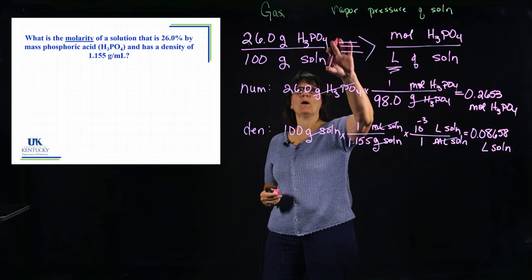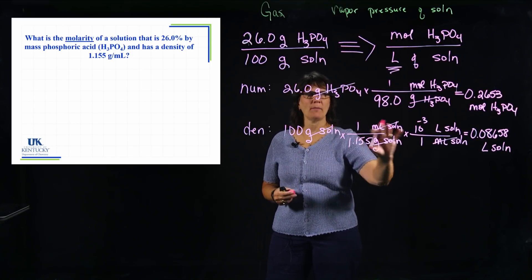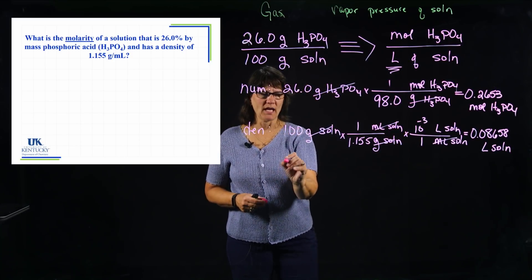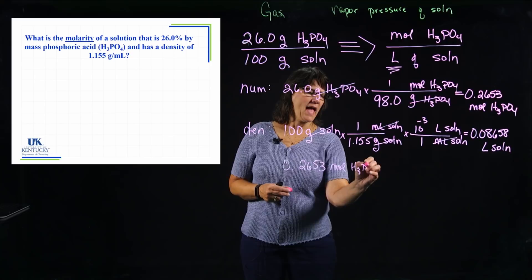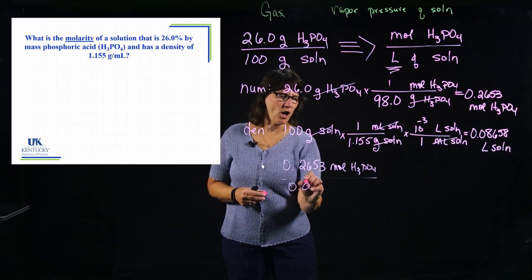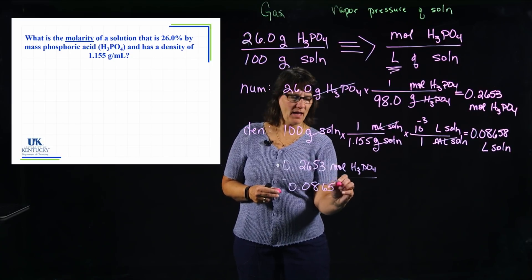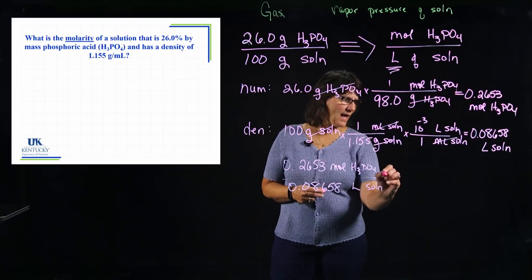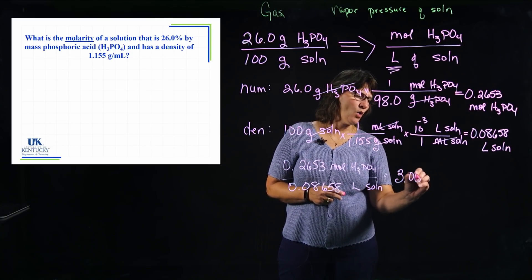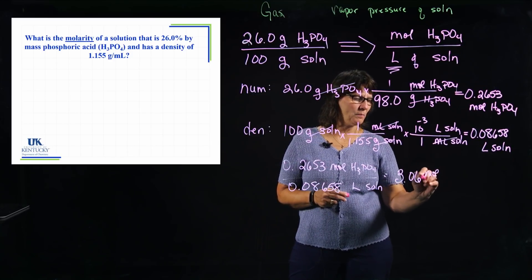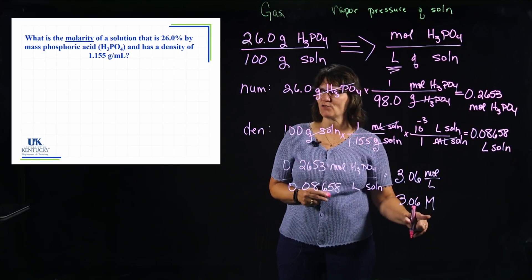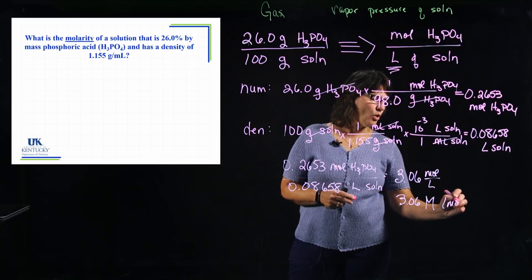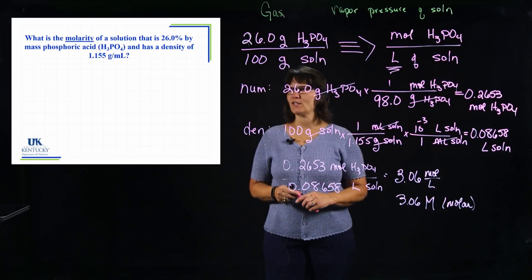Now we put them back together. We take 0.2653 moles divided by 0.08658 liters of solution, which gives 3.06. The units are moles of H₃PO₄ per liter, which we write as 3.06 M — it is a 3.06 molar solution of phosphoric acid.